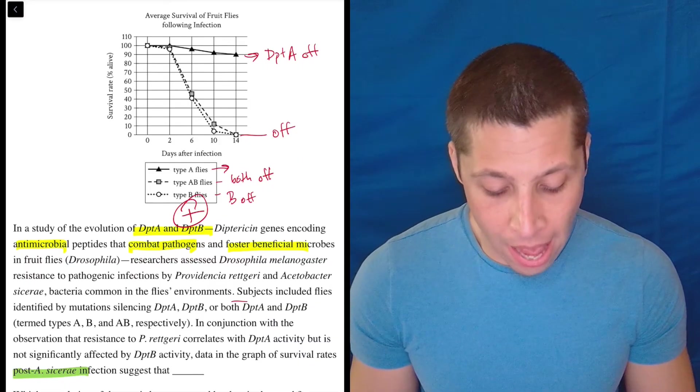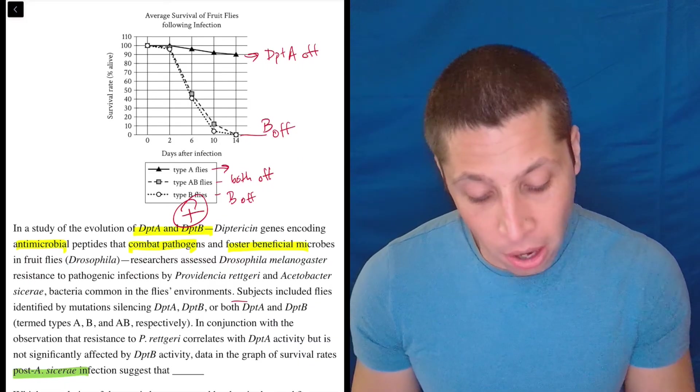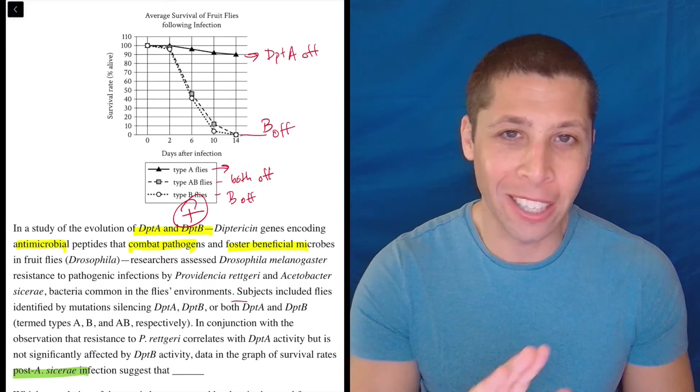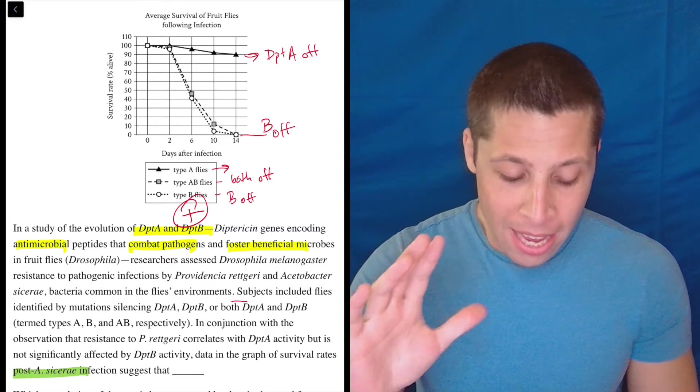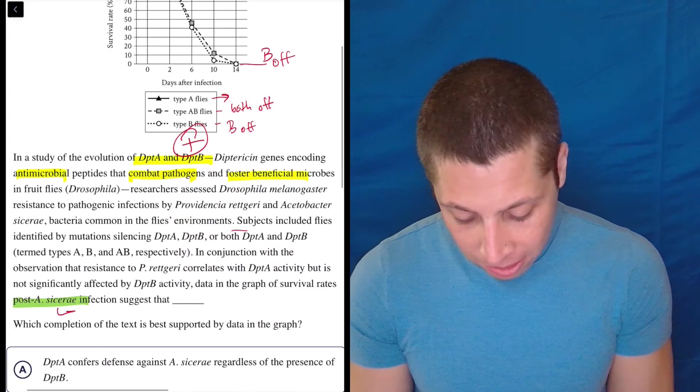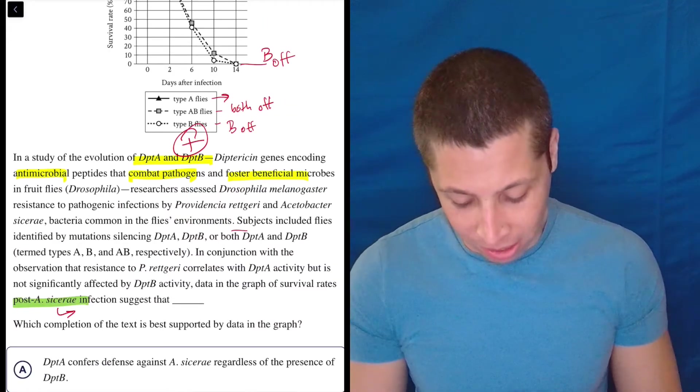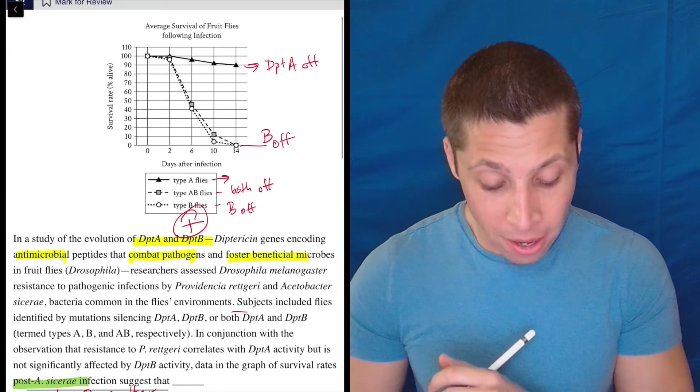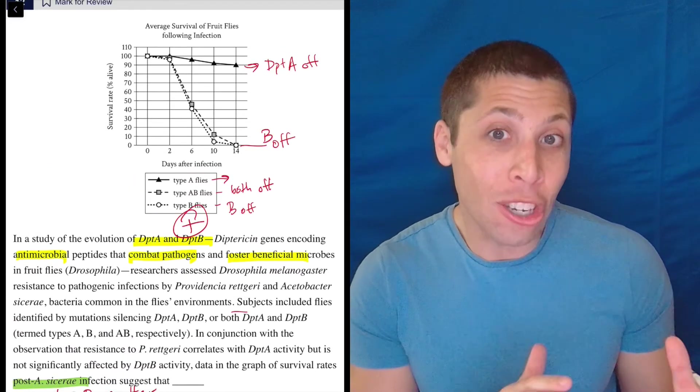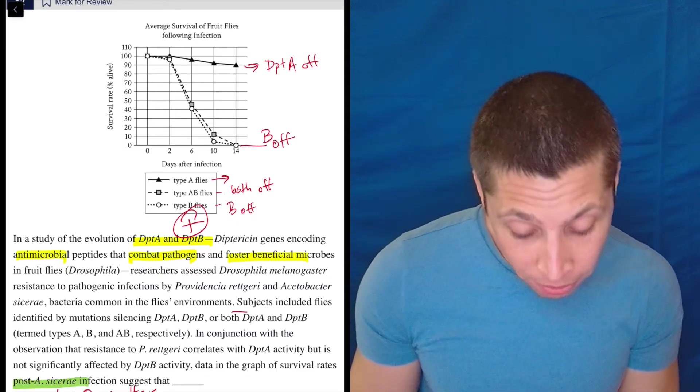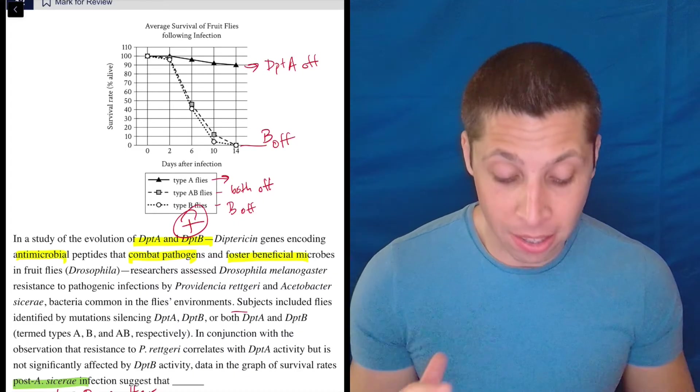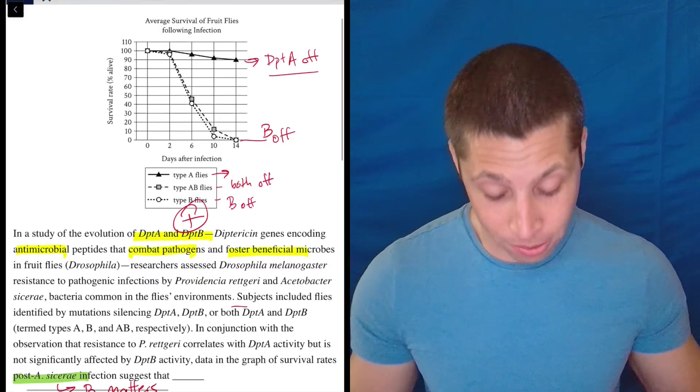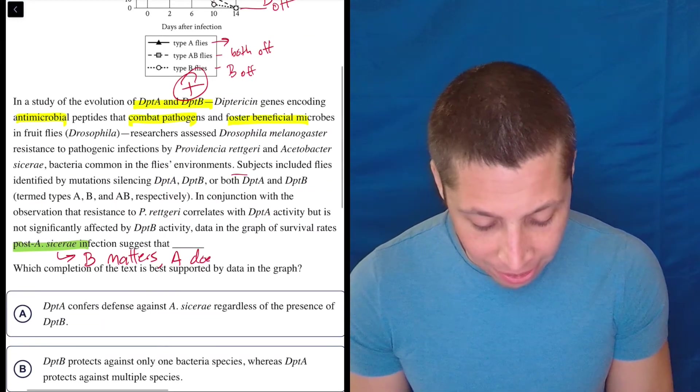So what that tells me is that if we turn off B, right? So if B is off, that kills the flies. So it'd be very hard to do this without looking at the choices, but I'm just doing it because this is so hard to explain. Basically what this is saying is for this A. sicerae, the B gene matters, right? Because if we turn it off, the flies die, but the A gene doesn't seem to matter because if we turn that off, yeah, a couple of them die, but most of them are fine, right? That's the top. That's this bit right here. If we turn off A, these things are not dying from this infection where if we turn off B, they're all dead. So B matters, A doesn't.